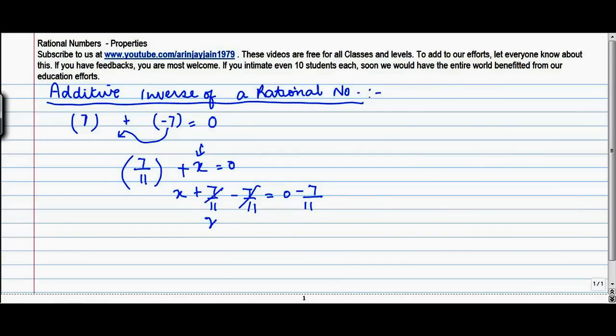This goes off, this goes off. x equals minus 7 upon 11. But 7 upon 11 is this number itself. What do we find? We find that the additive inverse of a rational number is minus that number itself.